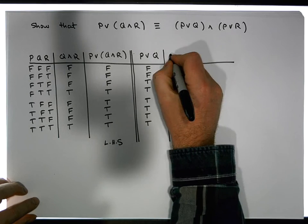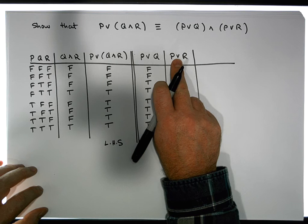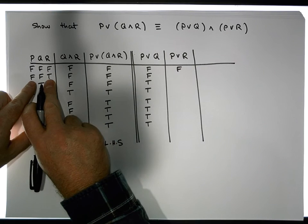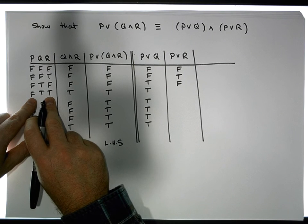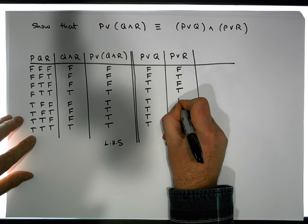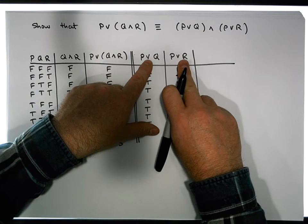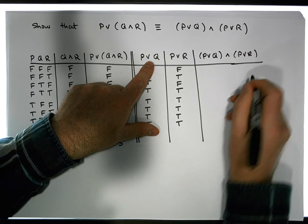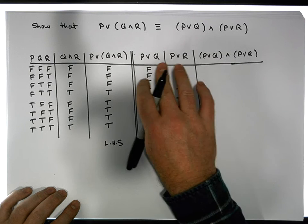Next we evaluate the right operand, P OR R. ORing the P and R columns: false-false at row one gives false; row two is false-true giving true; row three is false-false giving false; row four is false-true giving true; rows five through eight have P as true, so none are simultaneously false — all give true. Now we have both operands for the final AND.